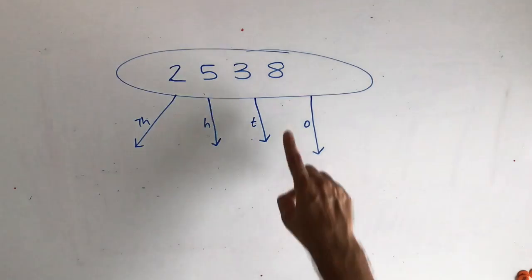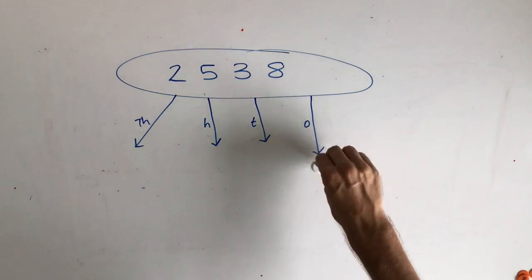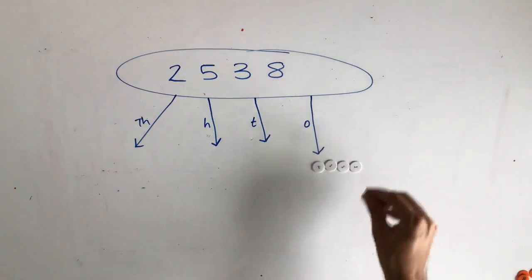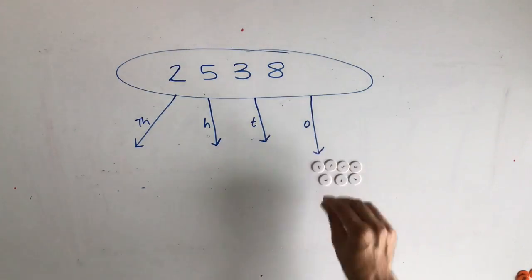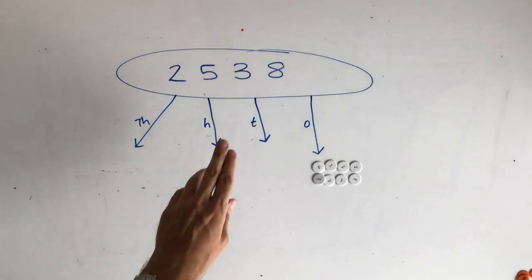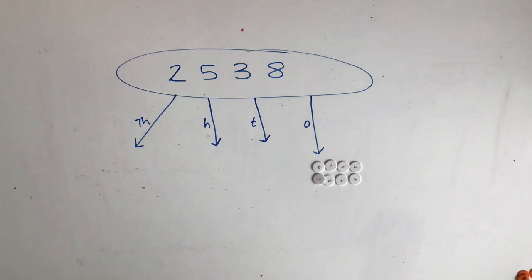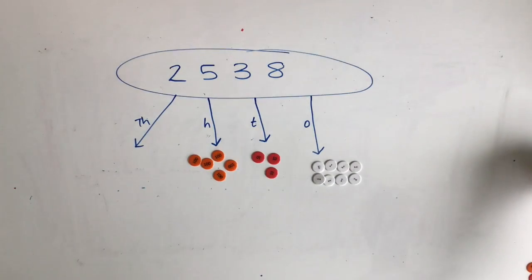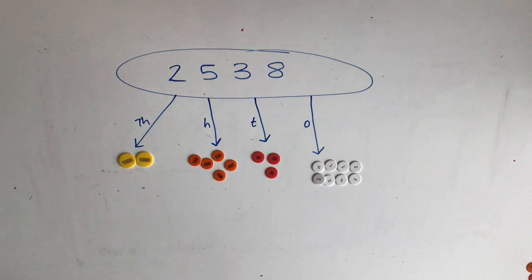Okay, so we've got eight ones. So I need to put eight ones down underneath. We've got three tens down, which is thirty. There are five hundreds, which is five hundred. And we've got two thousands, which is two thousand. So here we have the four digit number as well as the counters showing the value of each of those numbers inside it.